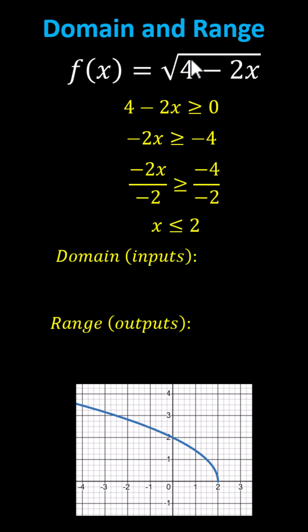Analyzing the graph of the function below, we can verify the result. Notice all the x values are less than or equal to 2. The graph starts at x equals 2 and moves to the left, indicating the domain is x less than or equal to 2. Using interval notation, we have the interval from negative infinity to 2, open on negative infinity and closed on 2.